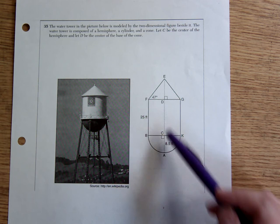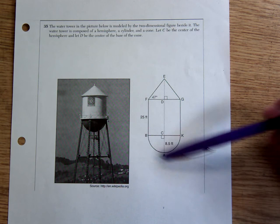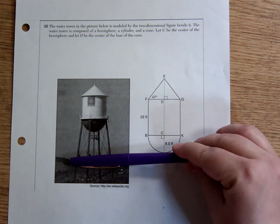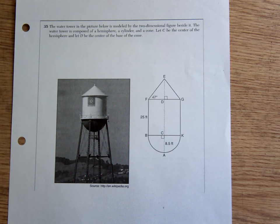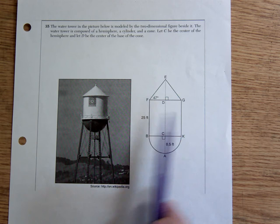Let C be the center of the hemisphere and let D be the center of the base of the cone. One thing I wanted to point out is because we've talked about cross sections—this two-dimensional figure that they drew for us is the same thing you would get if you slice this vertically down through the middle. So you could think of this as a vertical cross section of that water tower. Or another way you could think of it is if you rotated this around the dotted line, it would make this figure.